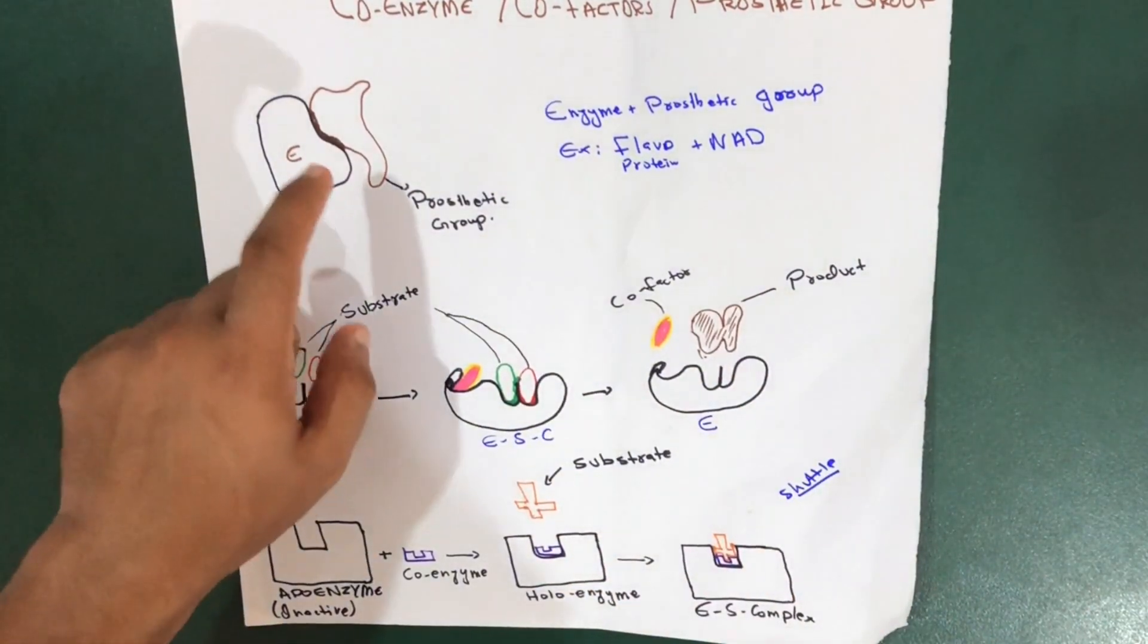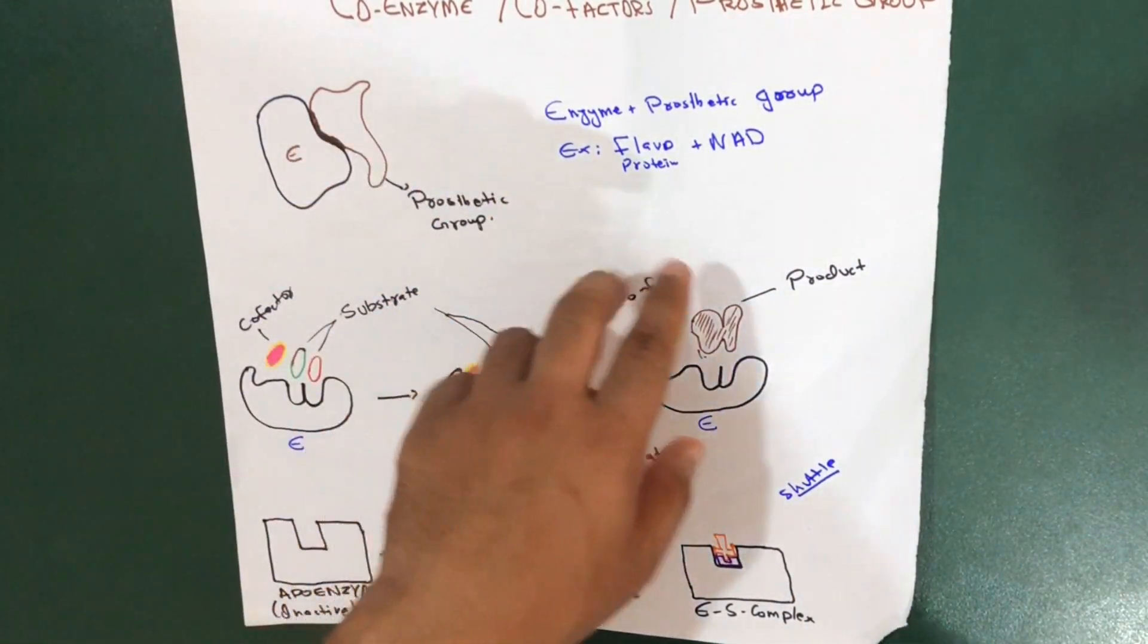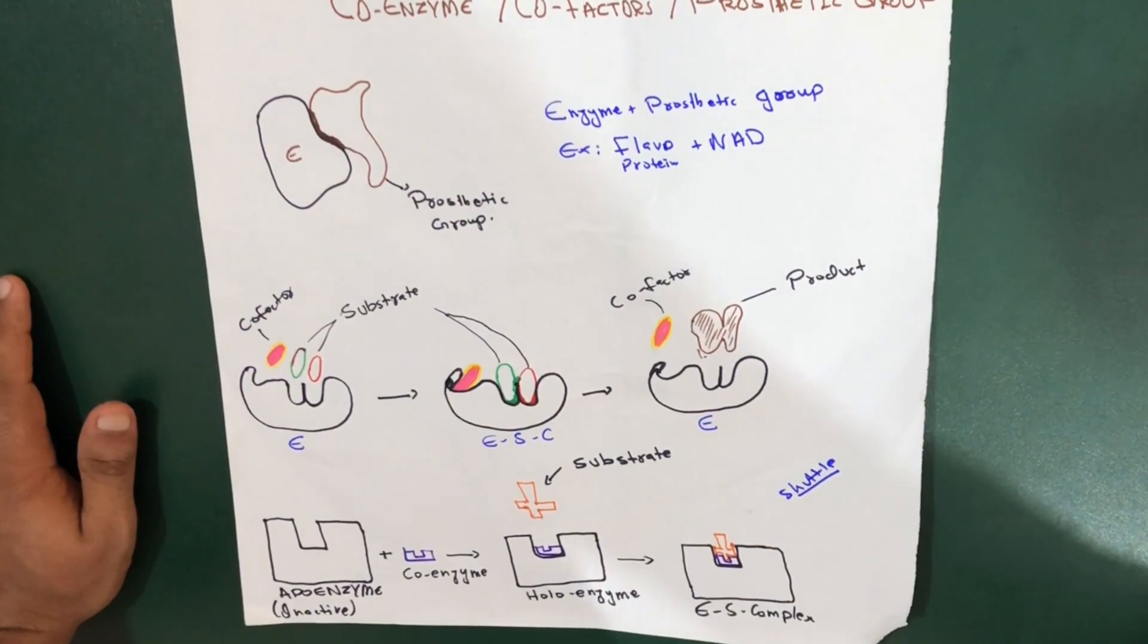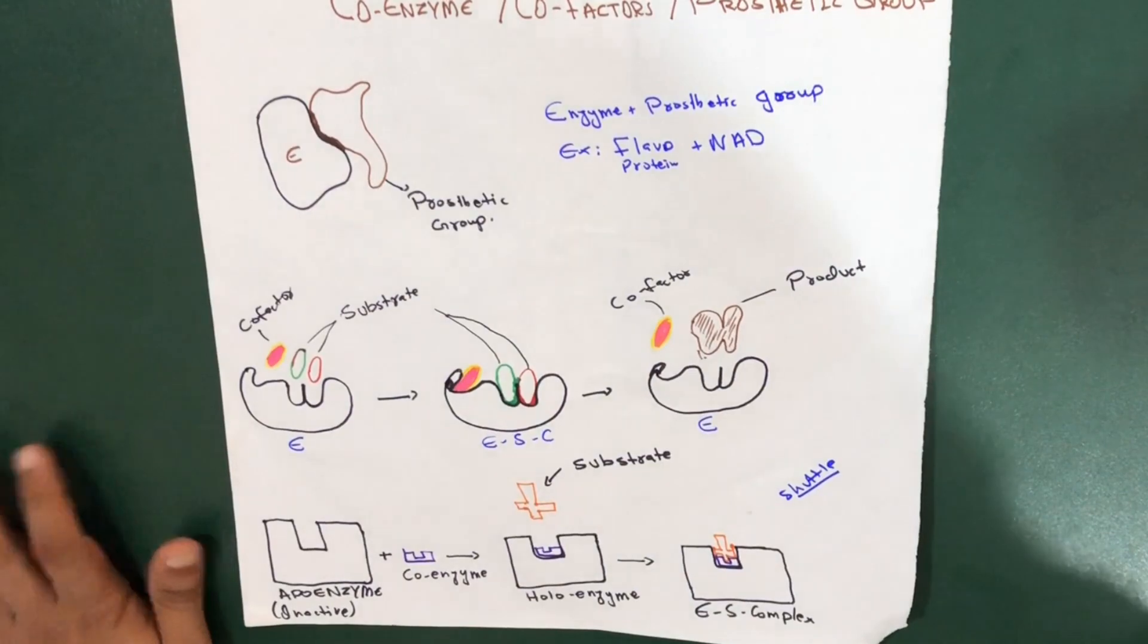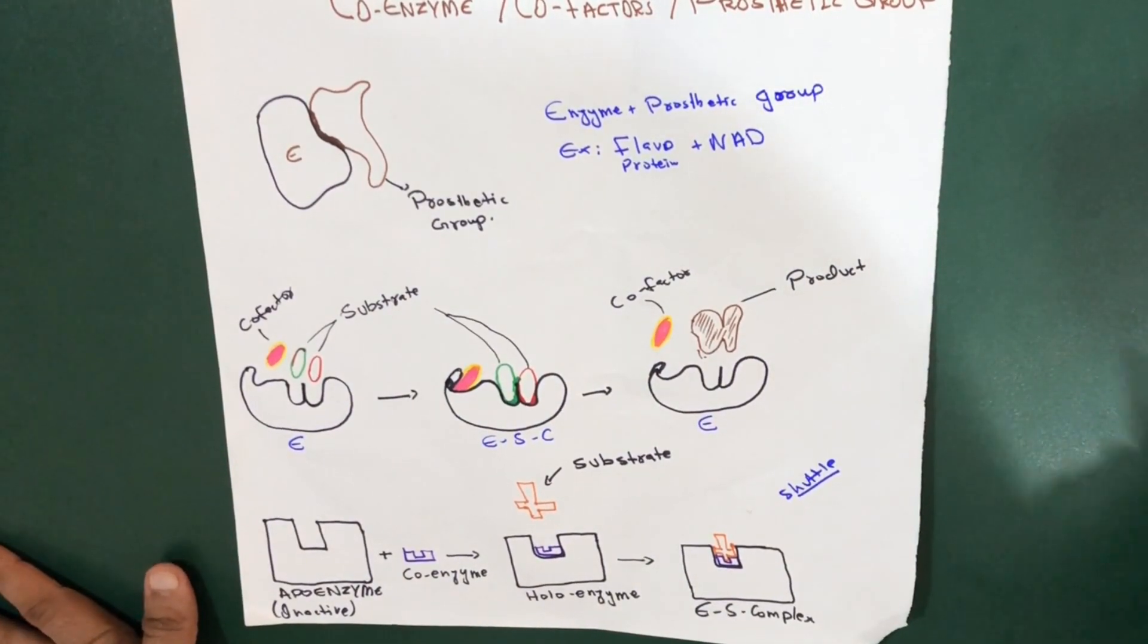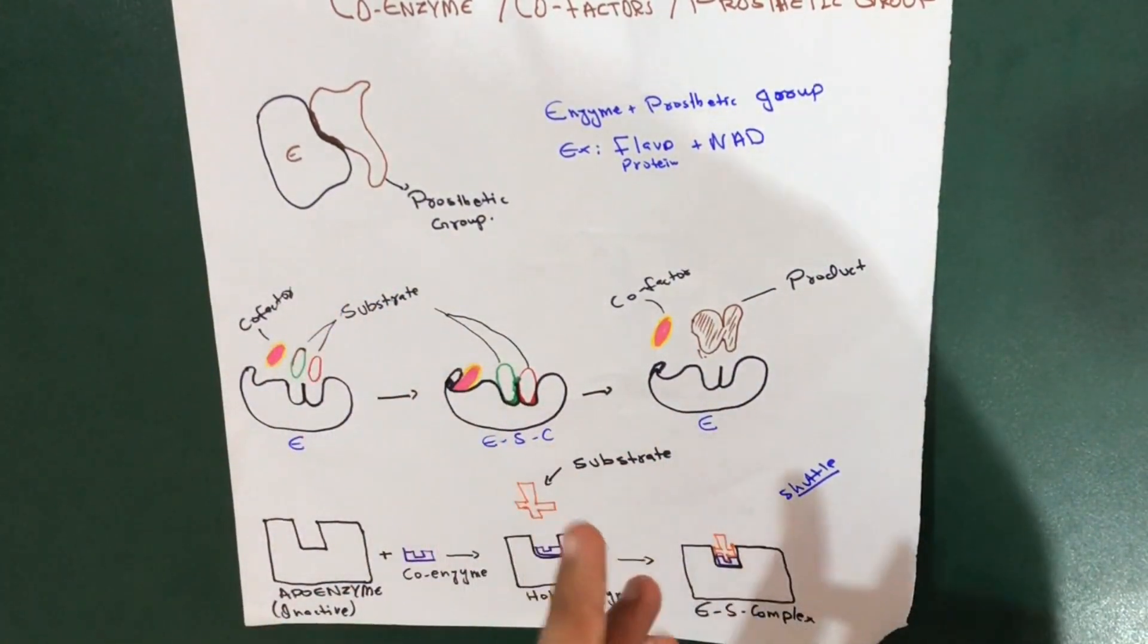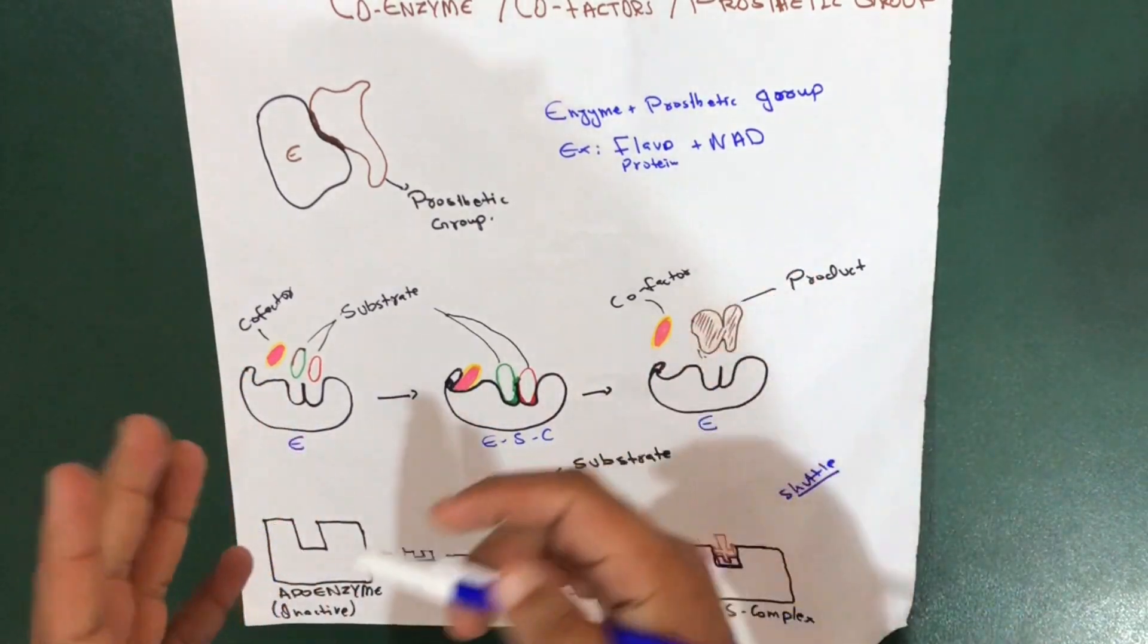Some examples we have are FMN, we've got FMN, we have the complete flavoprotein, and NAD. And one thing more to add in the prosthetic group, we have also the metal ion constitution.